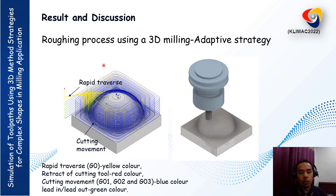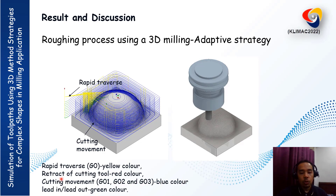After the roughing process using the 3D milling adaptive strategy, we can see the toolpath movement colors in our simulation. Rapid traverse is yellow, retract of the cutting tool is red, and cutting movement G01, G02, and G03 is blue. If we look here, we have more blue color compared to the other colors, because this is the cutting movement of our toolpath.